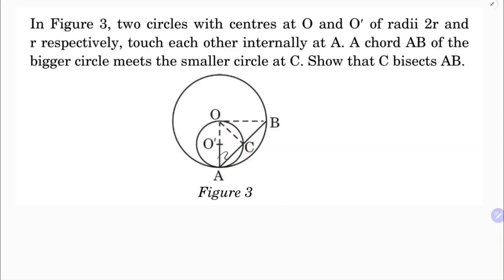This is 2R and this is R. They touch each other internally at A. At this point A, a chord AB of the bigger circle meets the smaller circle at C. Now see, if O' is the center,